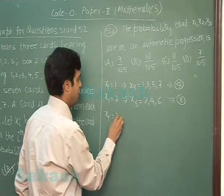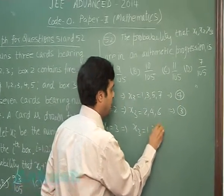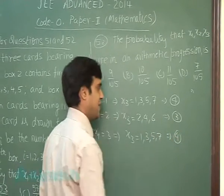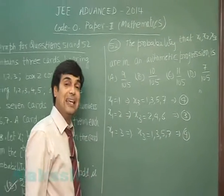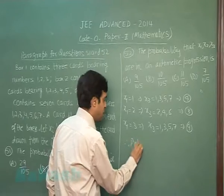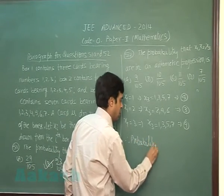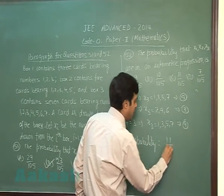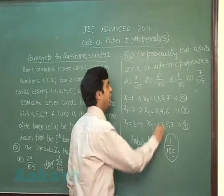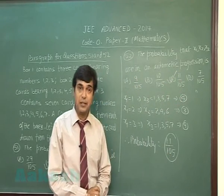When x1 is 3, x3 can be 1, 3, 5, or 7 — again 4 cases. So the total favorable cases are 4 + 3 + 4 = 11. Therefore the required probability for question 52 is 11 divided by 105, the same total as the previous question.